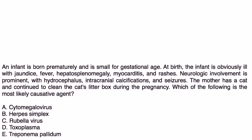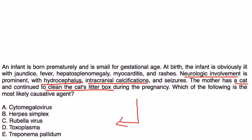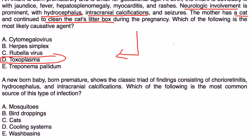Clinical vignette one: An infant is born prematurely and is small for gestational age. At birth, the infant is obviously ill with jaundice, fever, hepatosplenomegaly, myocarditis, and rashes. Neurologic involvement is prominent with hydrocephalus, intracranial calcifications, and seizures. The mother has a cat and continued to clean the cat's litter box during pregnancy. This is a classic clinical vignette describing fetus infection with toxoplasmosis.